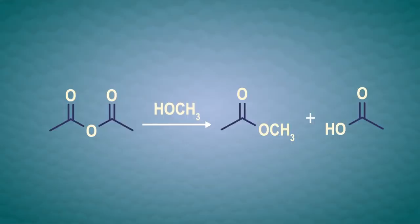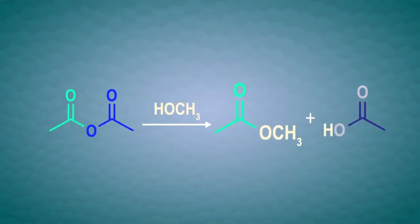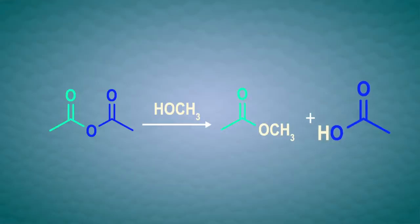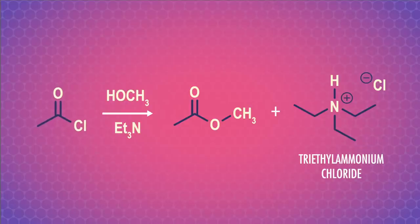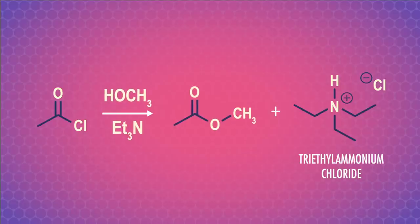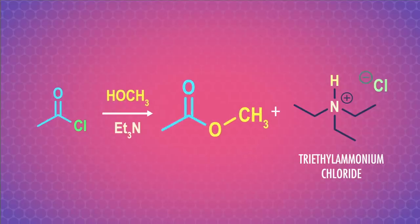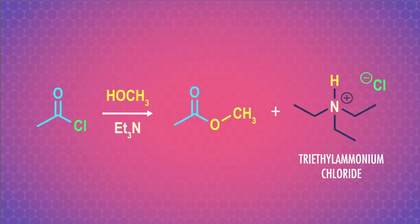Remembering our key rule with these interconversion reactions, we can also convert the more reactive acid chlorides to less reactive esters. To do this, we can use an alcohol and a mild base to swap out the chloride for an ester group. The base neutralizes the hydrochloric acid that forms as a side product.